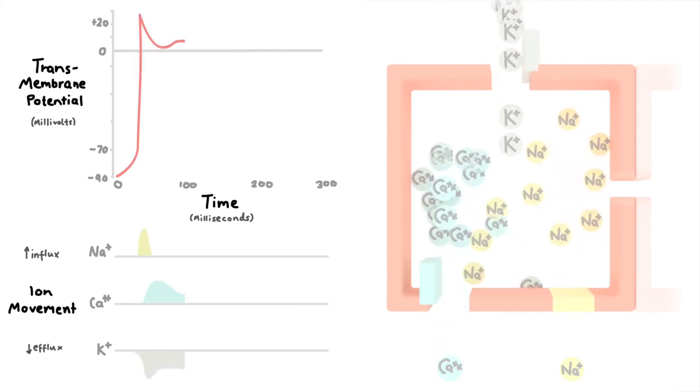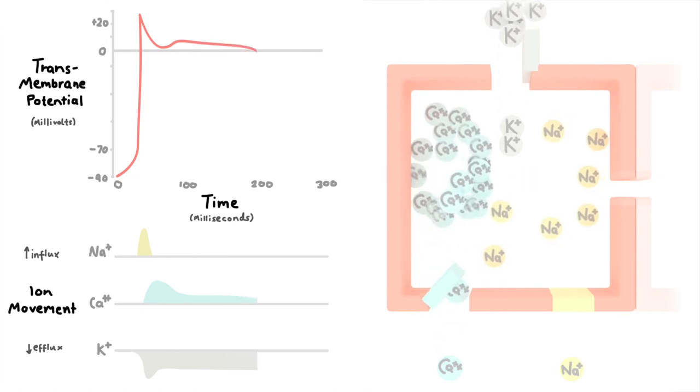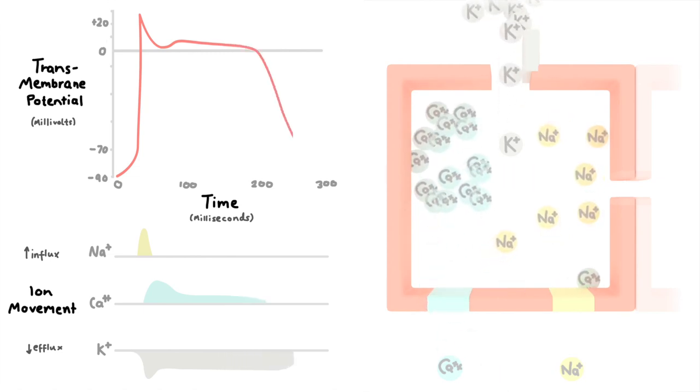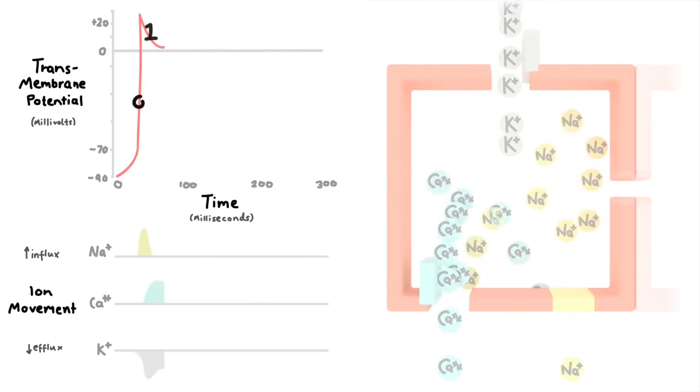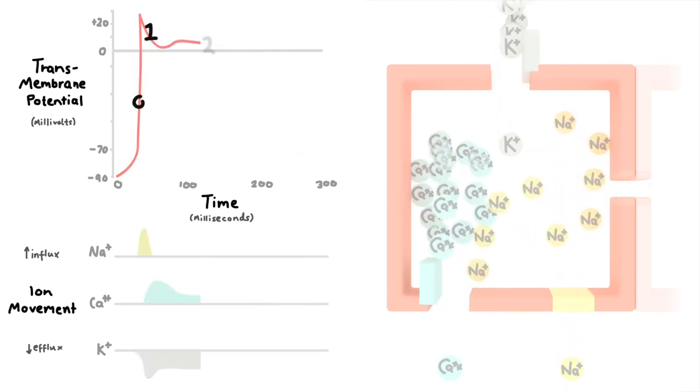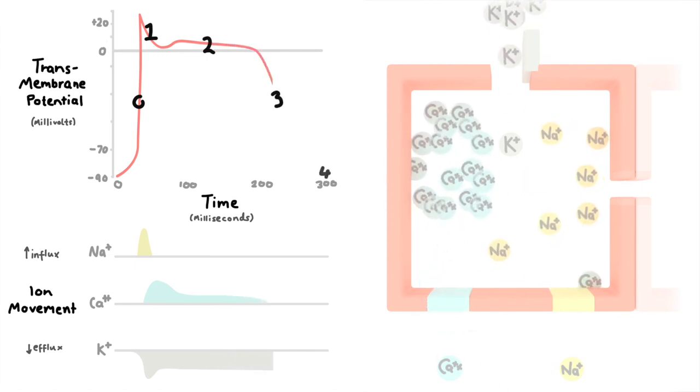One final thing worth mentioning is the numbers given to each phase of the cardiac myocyte action potential. Each major vector has a number. From zero to one, two, three, and then four, the resting phase.